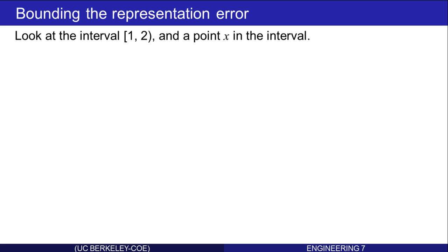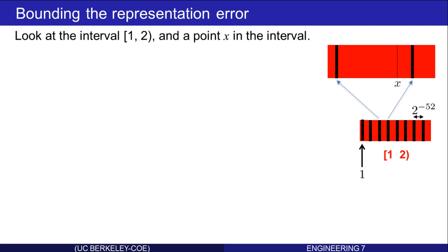Start by looking at the interval 1 to 2 and a point in that interval. Here I've shown the interval 1 to 2 with all the representable numbers as the dark lines. I've written them as separated by 2 to the negative 52, so here it's for double, but that separation could be something else — for single, it's 2 to the negative 23rd, for instance.